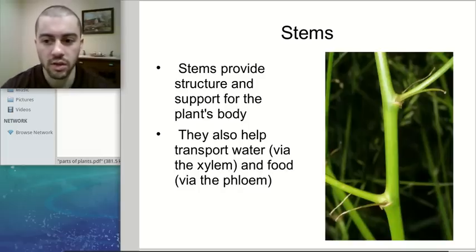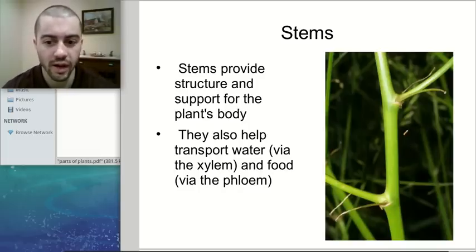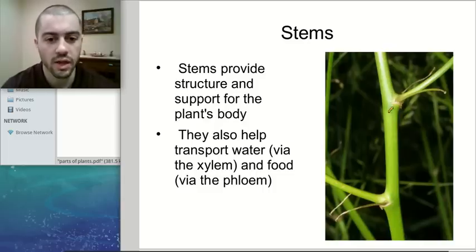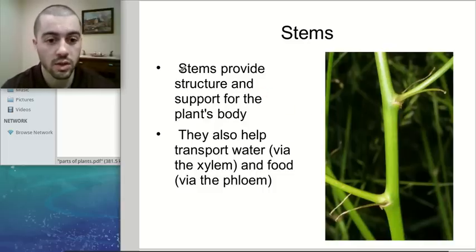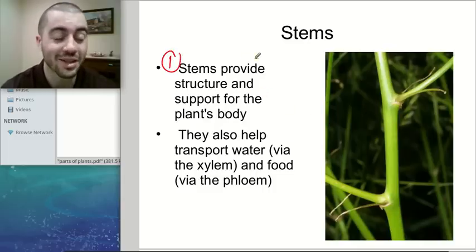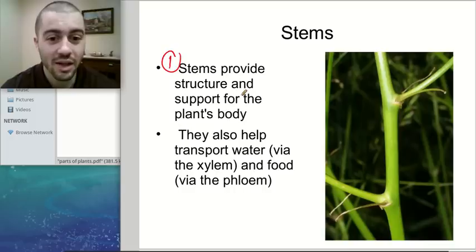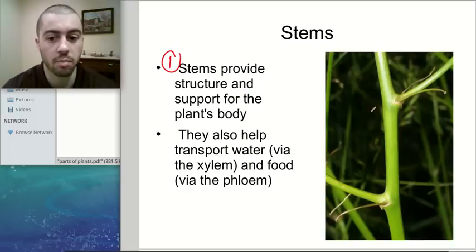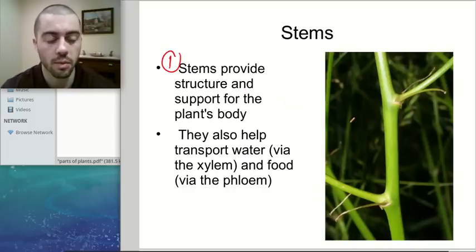The next structure: stems. We've all seen stems of plants before — there are these kind of sturdy, stick-looking things most of the time. Two things that stems do: stems provide structure and support for the plant's body. Both the roots and the stems are going to be providing some structure and support for the plant.